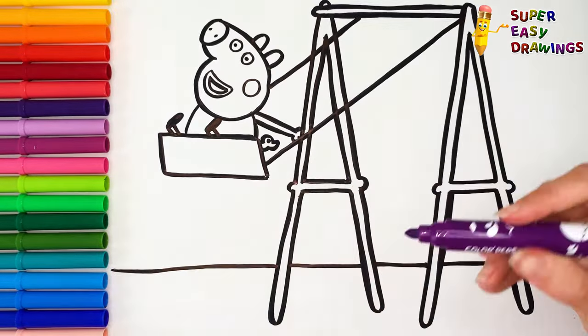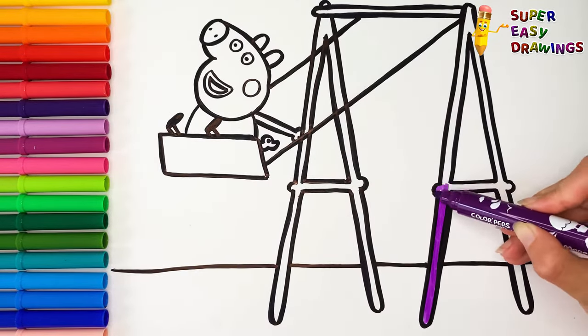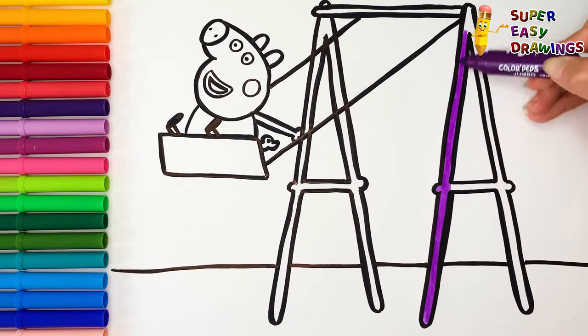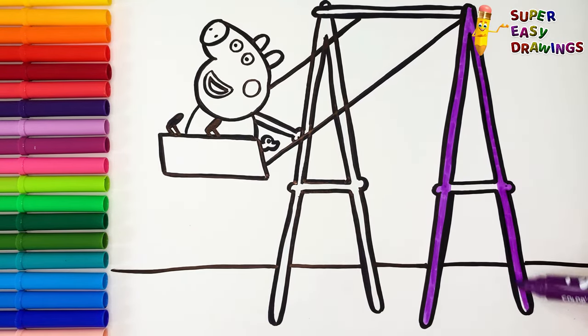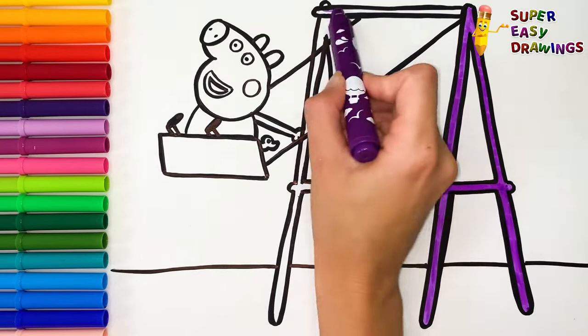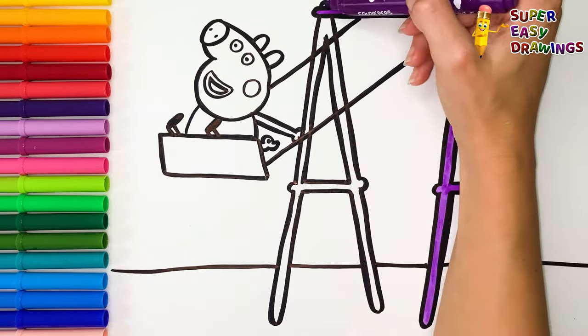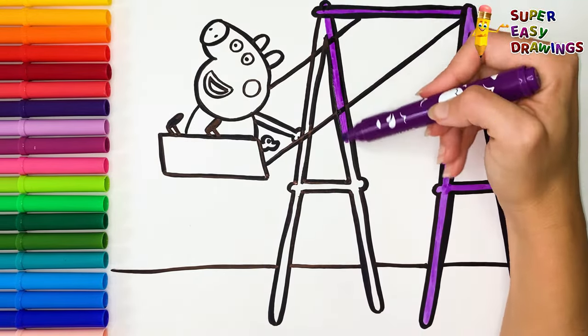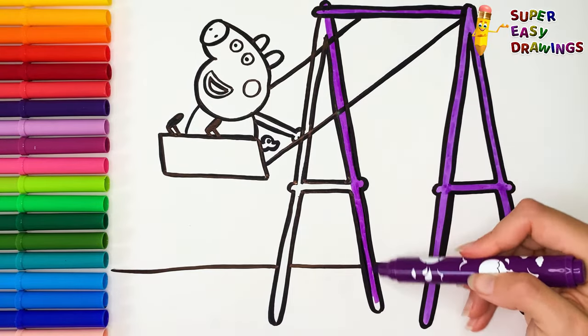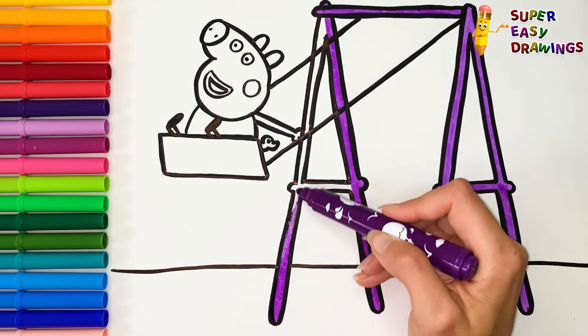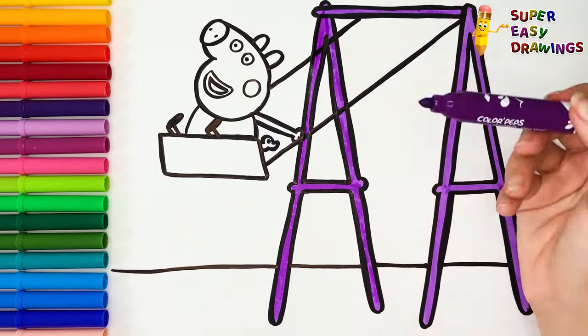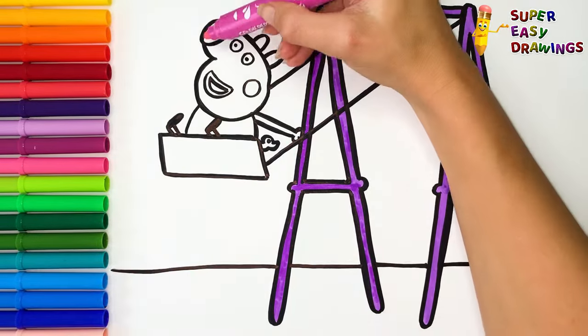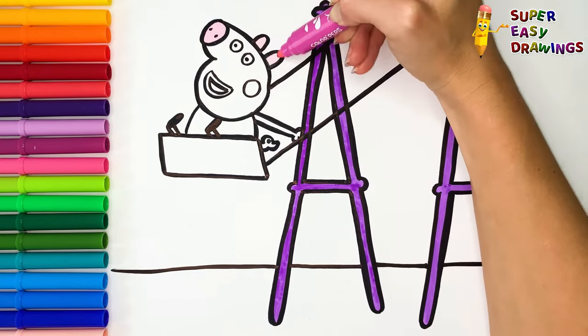Let's start coloring. I use this purple marker for the swing. I color the skin of Peppa Pig with this pink marker.